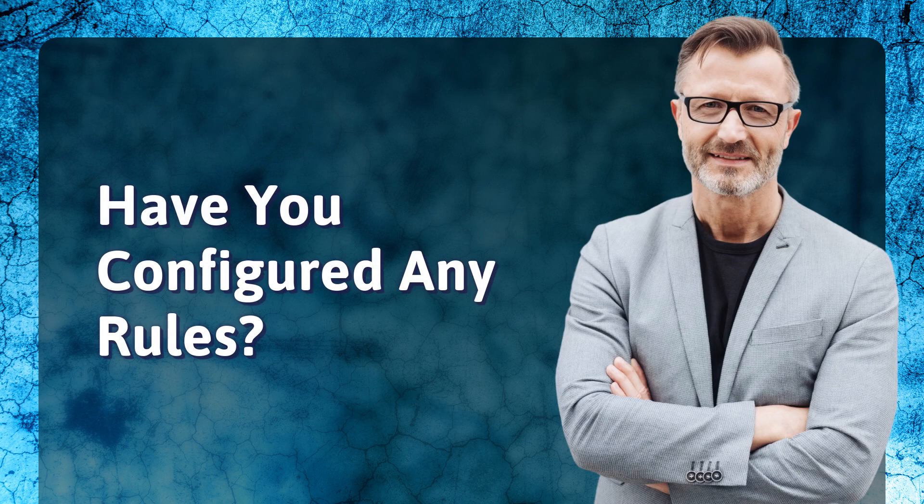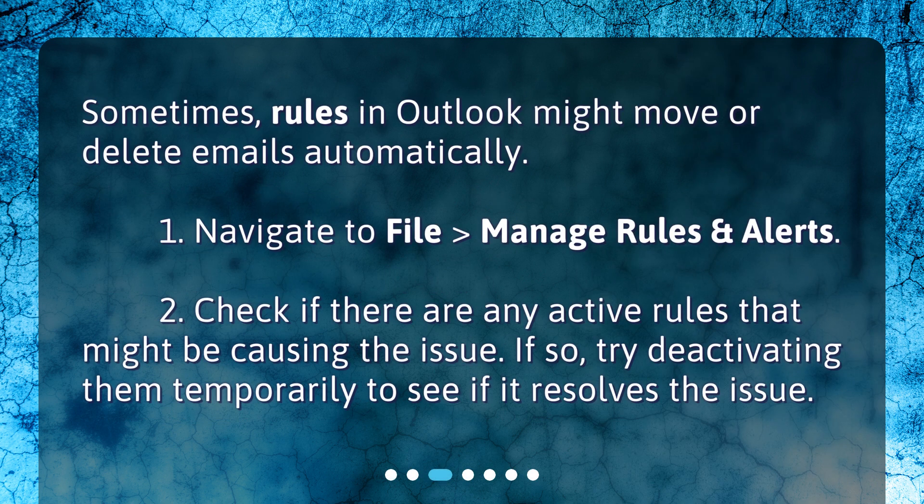Have you configured any rules? Sometimes rules in Outlook might move or delete emails automatically. Navigate to File, then Manage Rules and Alerts. Check if there are any active rules that might be causing the issue. If so, try deactivating them temporarily to see if it resolves the issue.